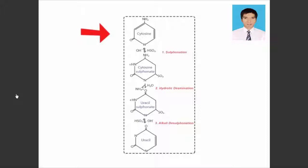The first is sulfonation of the cytosine residue by the addition of bisulfite to the 5,6 double bond. Secondly, hydrolytic deamination of the cytosine bisulfite derivative produces a uracil bisulfite derivative. And thirdly, removal of the sulfonate group by alkali treatment results in a uracil residue.